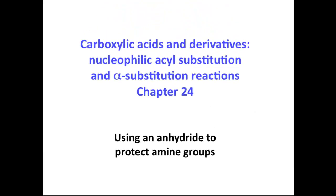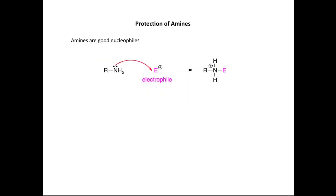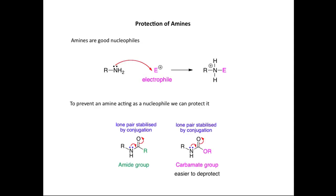We're going to discuss using an anhydride to protect amine groups, covered in the carboxylic acids and derivatives, nucleophilic acyl substitution and alpha substitution reactions chapter. The first thing we're going to discuss is why we would want to protect an amine. Amines are really good nucleophiles — they react with a wide range of different electrophiles. The lone pair on the nitrogen can attack a wide variety of electrophiles, forming products of this type. So if we want to prevent an amine acting as a nucleophile, we can protect it.